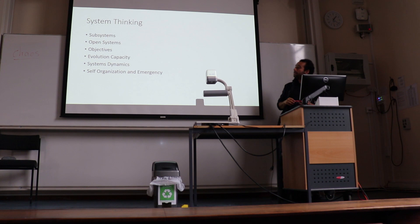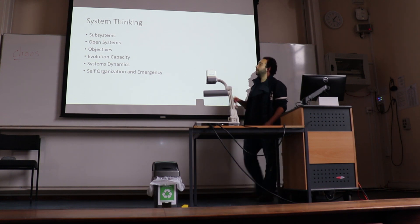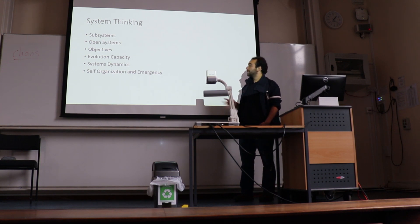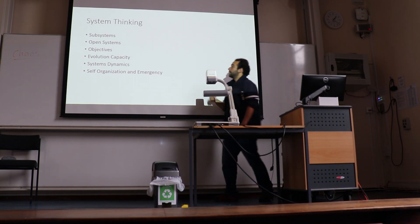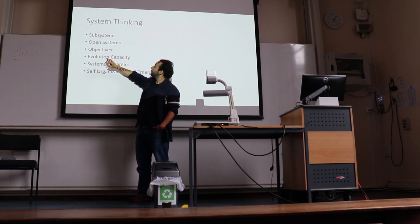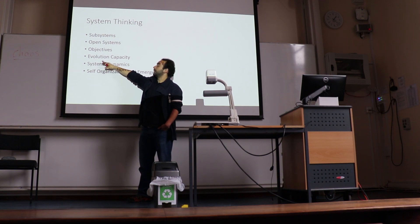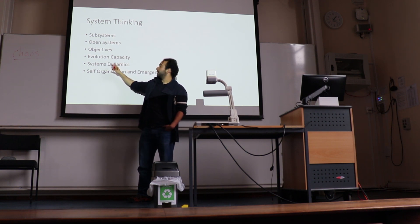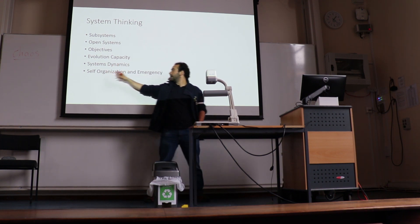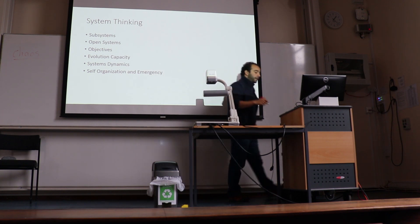Here is a brief summary of systems thinking — there are many classifications, but you need to take into account six things. Basically everything is a system; systems are made of subsystems; systems are open; systems have objectives; they have an evolution capacity — system dynamics; and they self-organize and have emergent effects.